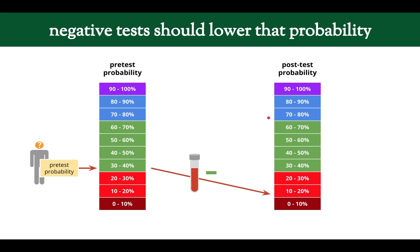Similarly, you could have a negative test, which does the opposite — it lowers the post-test probability. So we started at 33%, the test was negative, and it brought us down to 13%. That's what tests help us do: you start with your pre-test probability, do a test, and get your post-test probability.